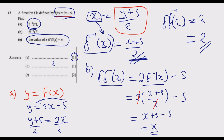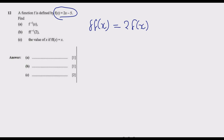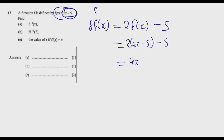Part c asks us to find the value of x when f(f(x)) = x. In the original function f(x) = 2x − 5, wherever there is x we substitute f(x). So f(f(x)) = 2 × (2x − 5) − 5 = 4x − 10 − 5, which gives us f(f(x)) = 4x − 15.